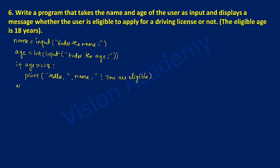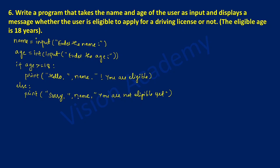If this is not true then the else part will get executed — else colon. After writing else we have to give one space or tab space. Here I'm going to write the print statement: in double quotation marks I will write 'sorry', put comma, then the name variable, then double quotation marks 'you are not eligible', end the double quotation mark and close the bracket.